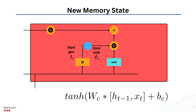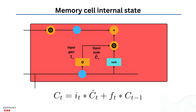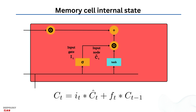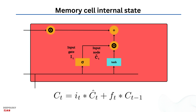The new memory vector created in this step doesn't determine whether the new input data is worth remembering — that's why an input gate is also required. The final result of combining the new memory update and the input gate filter is used to update the cell state, which is the long-term memory of the LSTM network. Only the relevant components of the new memory update are added to the cell state through pointwise multiplication, and the updated cell state represents the updated long-term memory of the network.